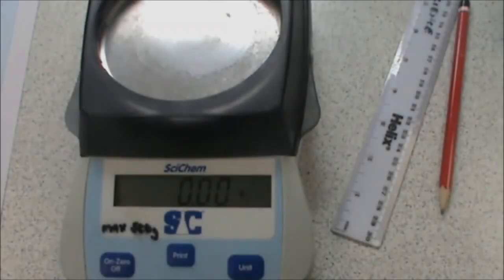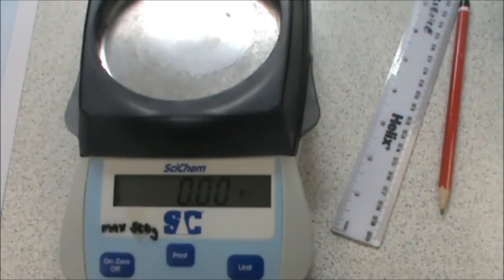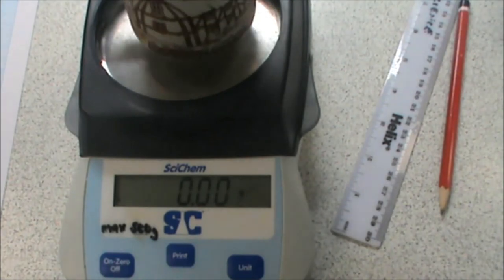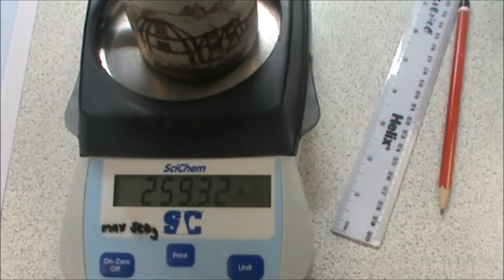According to our graph our object has a weight of 2.3 Newtons, and that is 230 grams. So let's see how close we are. 260 grams. So we're 30 grams out. Given the equipment that we've got, that's not far off.